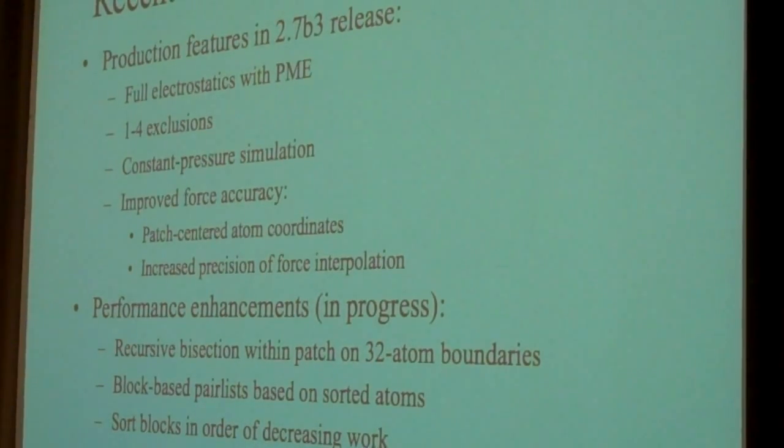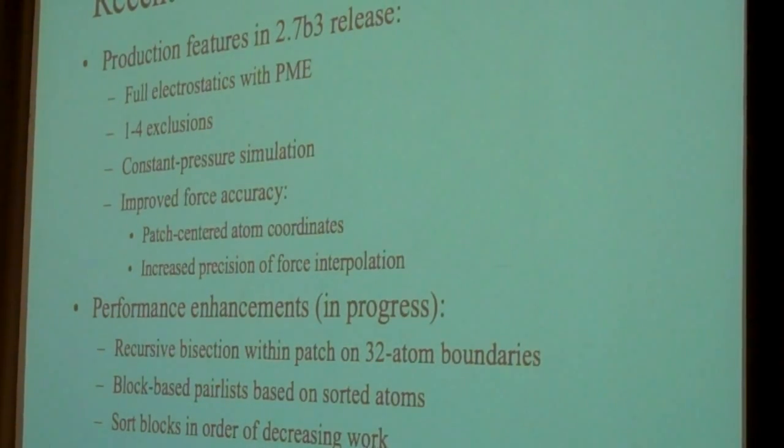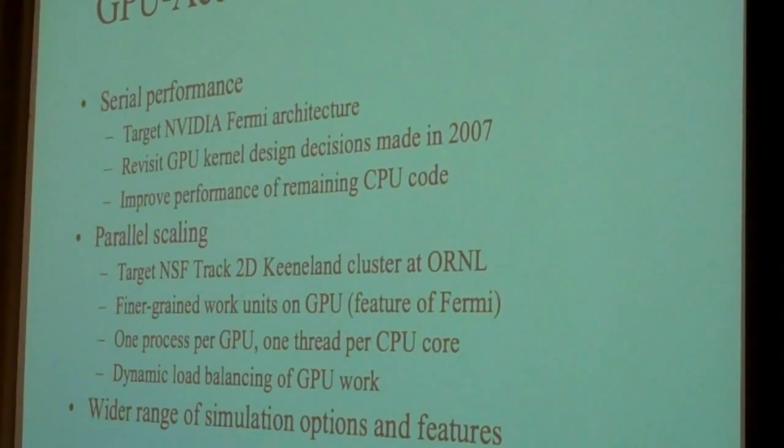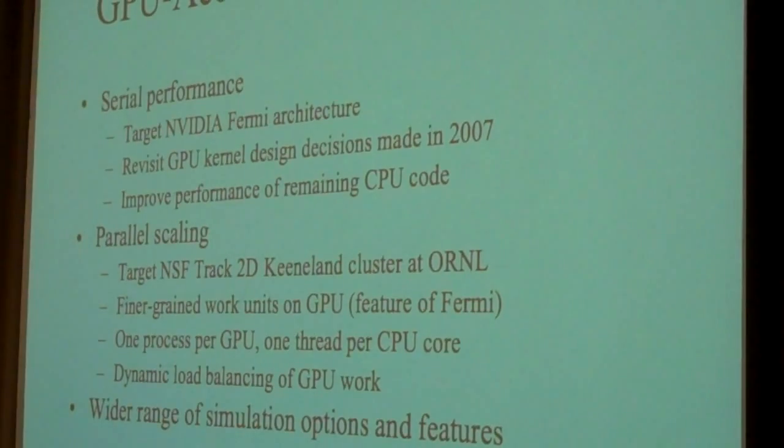We have some performance enhancements in progress. We're working on an inversion of pairlists which roughly doubles performance using 16-atom block-based pairlists. Rather than atom-to-atom, we're switching off which chunks of atoms we're loading. Looking forward, we're targeting the Fermi architecture for future kernel designs, and targeting new Fermi-based clusters going in at Oak Ridge and hopefully at NCSA. Those will be on the order of 500 GPUs per cluster.